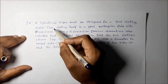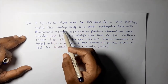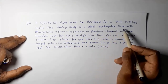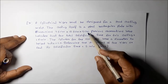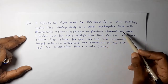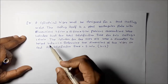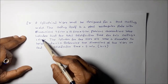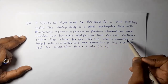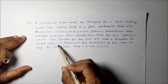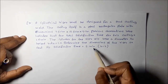In this problem, a cylindrical riser must be designed for a sand casting mold. The casting itself is a steel rectangular plate with dimensions 7.5 cm × 12.5 cm × 2 cm thickness. Previous observations have indicated that the total solidification time for this casting is 1.6 minutes. The cylinder for the riser will have a diameter-to-height ratio of 1:1. Determine the dimensions of the riser so that its solidification time is equal to 2 minutes.